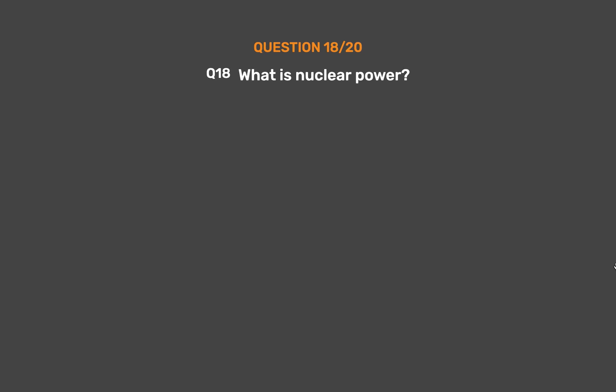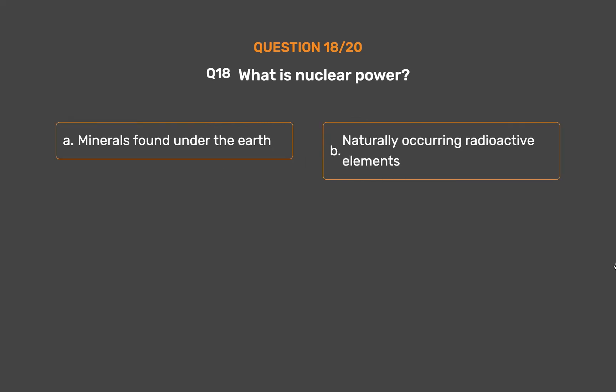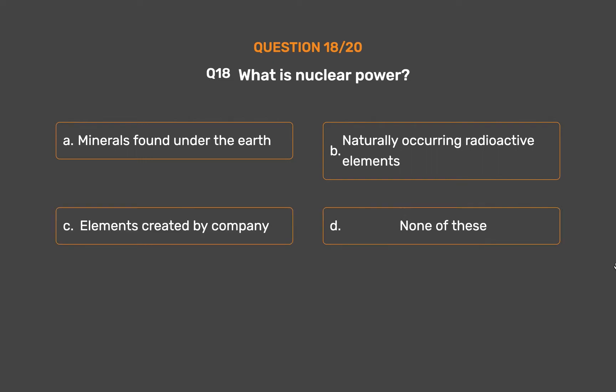Question 18: What is nuclear power? Option A: Minerals found under the earth. Option B: Naturally occurring radioactive elements. Option C: Elements created by a company. Option D: None of these.